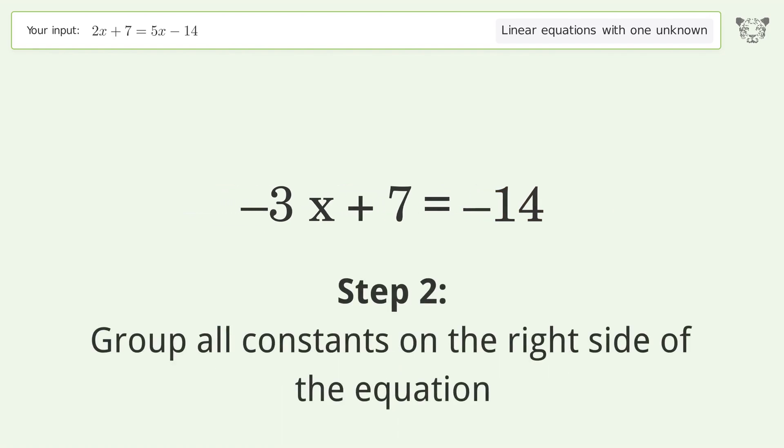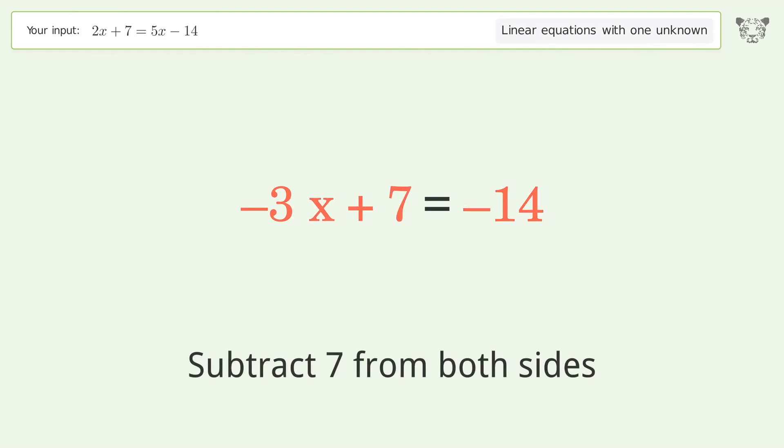Group all constants on the right side of the equation. Subtract 7 from both sides.